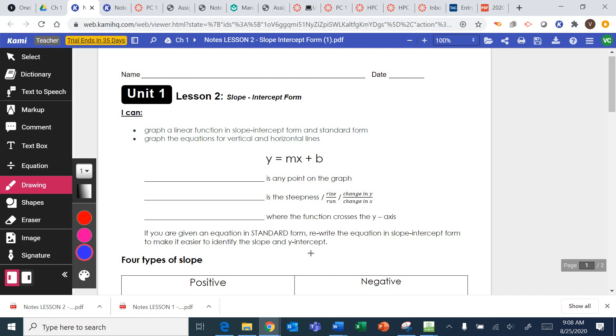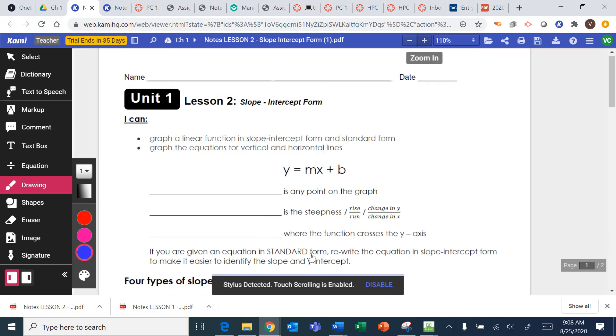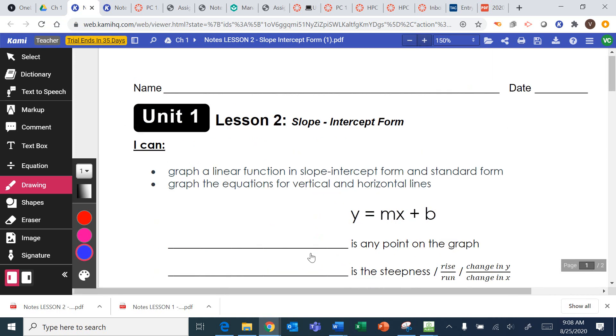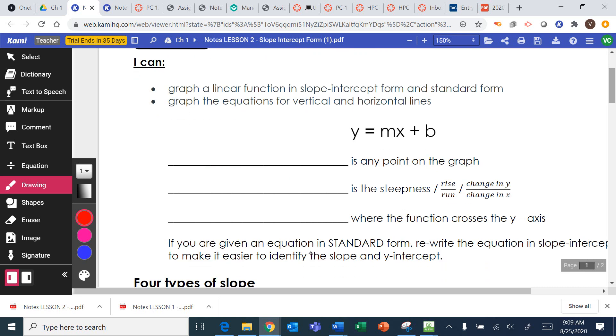Okay, so for lesson two, we are going to talk about slope-intercept form of a line. This is the equation of a line. You cannot have a line without an equal sign. It has to be y equals or x equals to have that line. y equals mx plus b is called slope-intercept form.